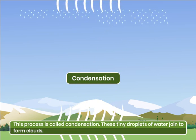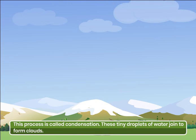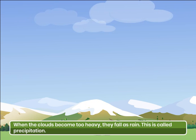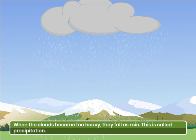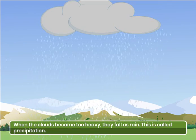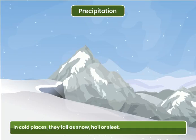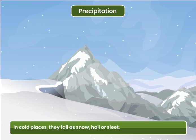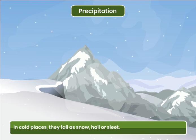These tiny droplets of water join to form clouds. When the clouds become too heavy, they fall as rain. This is called precipitation. In cold places, they fall as snow, hail or sleet.